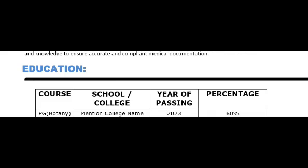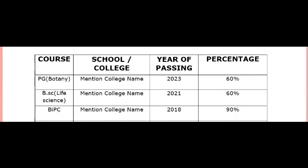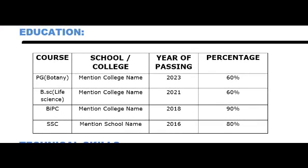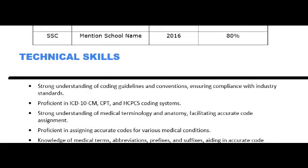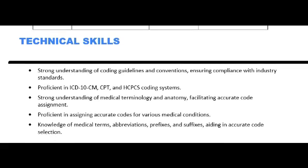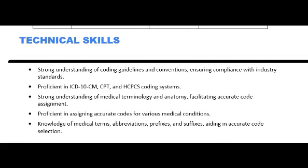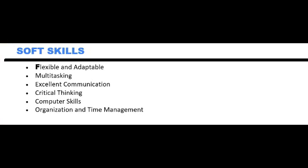Educational details are given in a box-type layout — you can mention your course, graduation date, school, year of passing, and percentage. In the technical skills section, mention whatever skills are required for a medical coder, like anatomy, physiology, medical terminology, abbreviations, ICD-10, CPT, and HCC guidelines. Below that, I have added a soft skills headline with skills like flexible and adaptable, multitasking, and excellent communication skills.